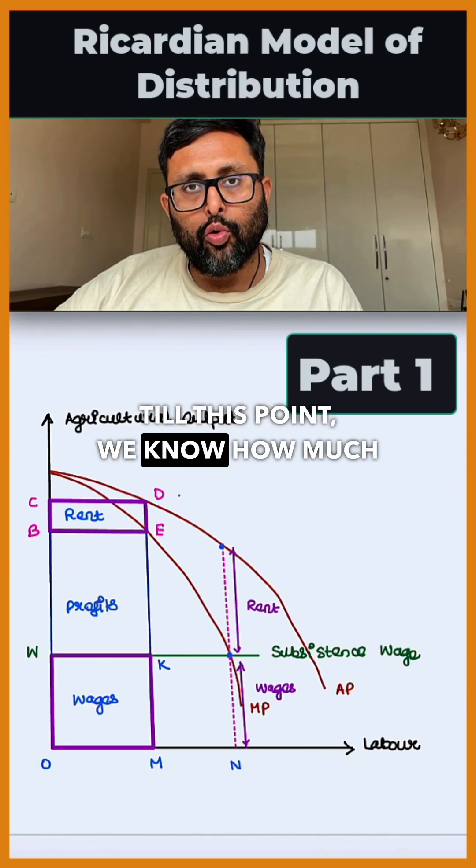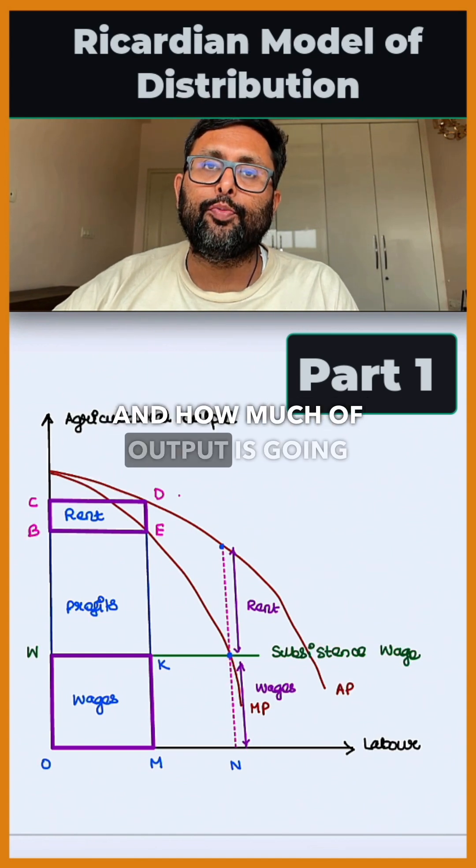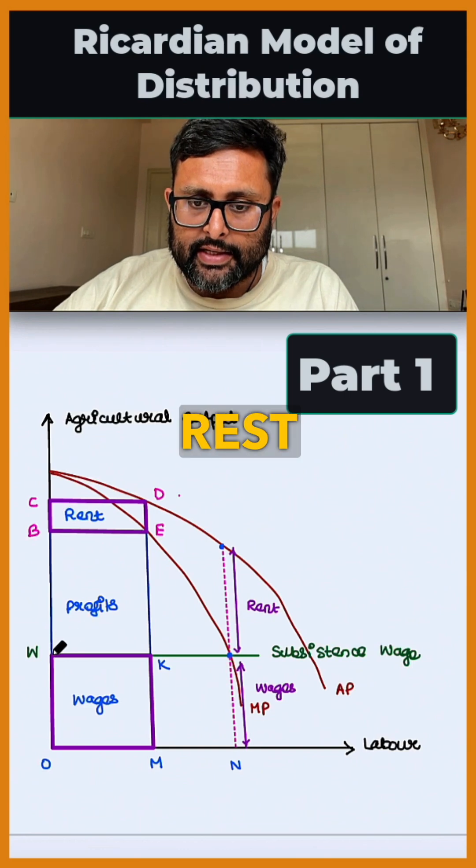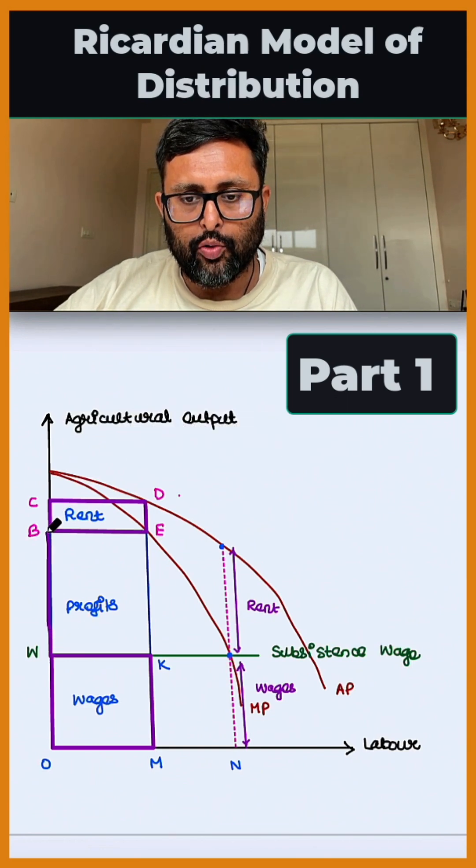Till this point, we know how much of output is going towards rent and how much is going towards wages. The rest is divided in terms of profits, which is given by WBEK.